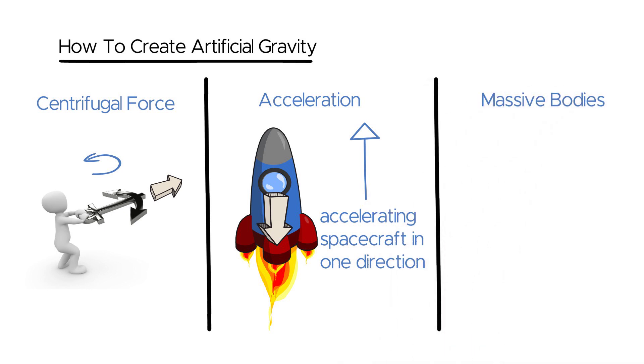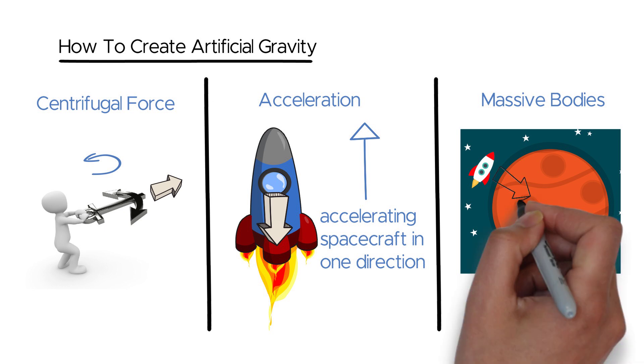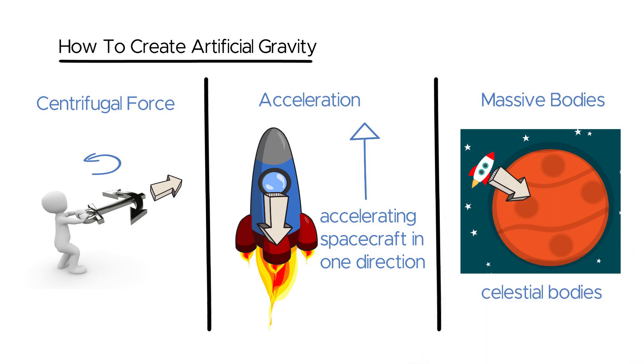Utilizing the gravitational force of massive celestial bodies like planets or moons is a passive way to achieve artificial gravity. By orbiting these bodies, spacecraft can experience a gravitational pull similar to that on Earth.